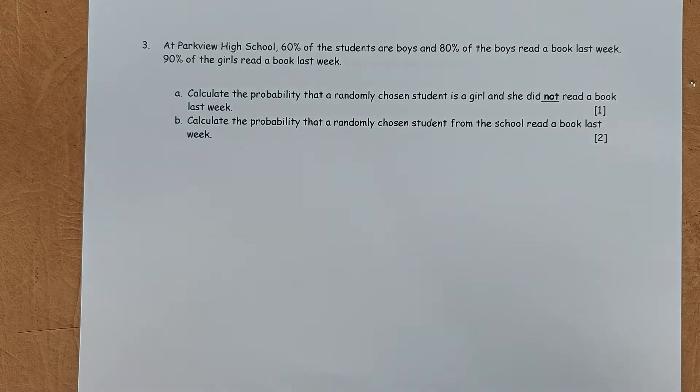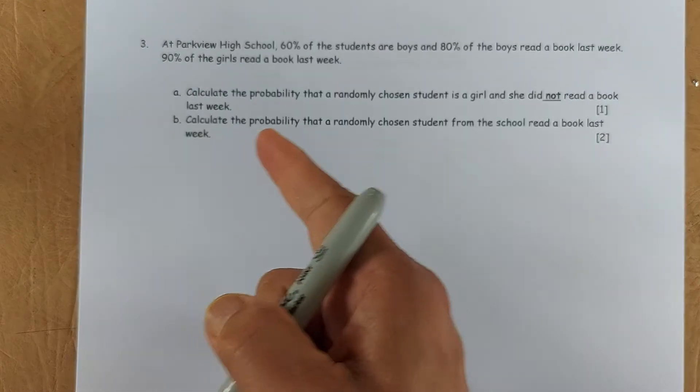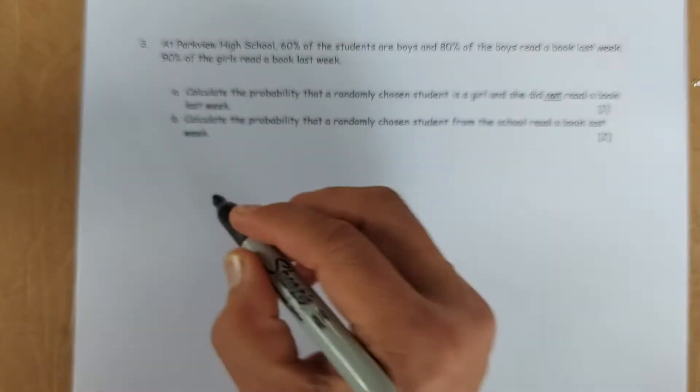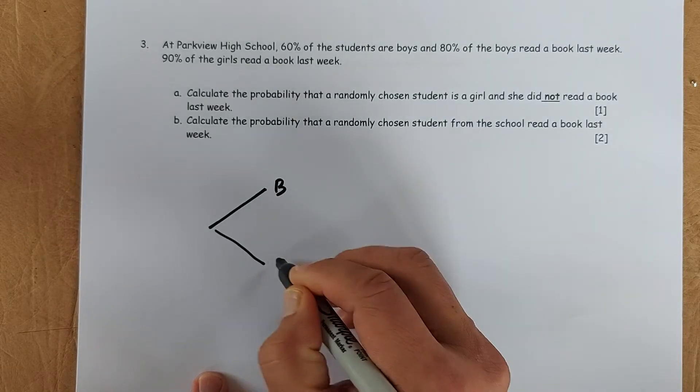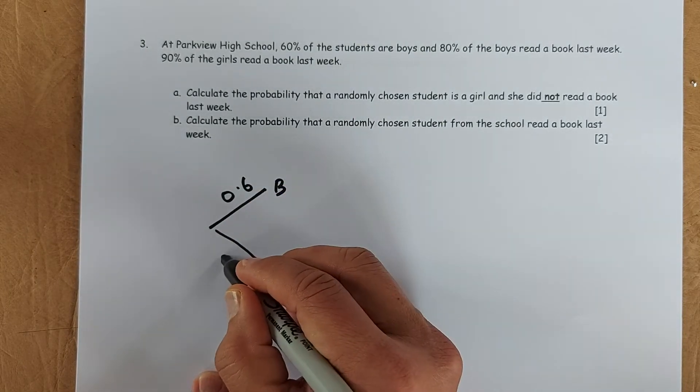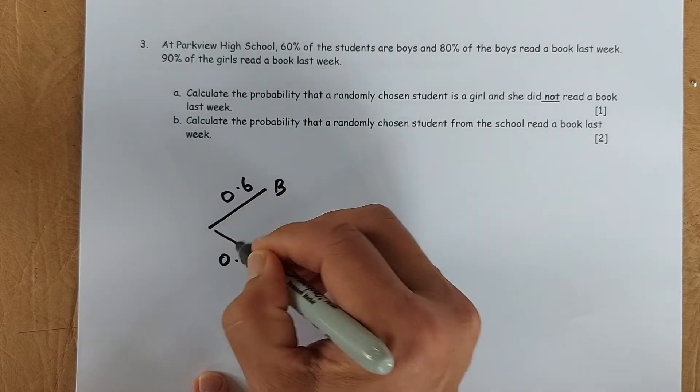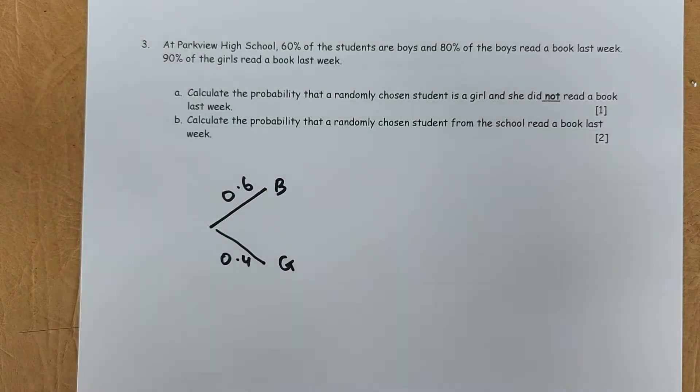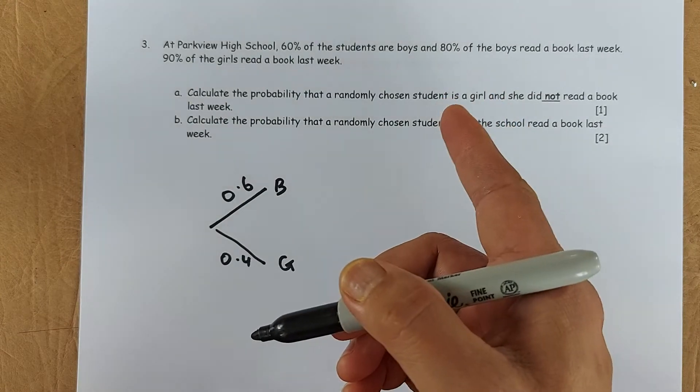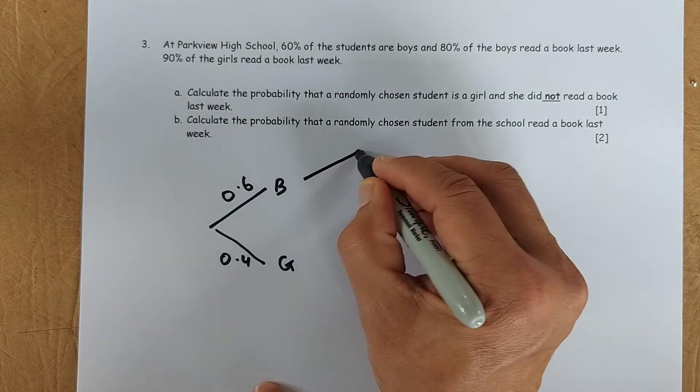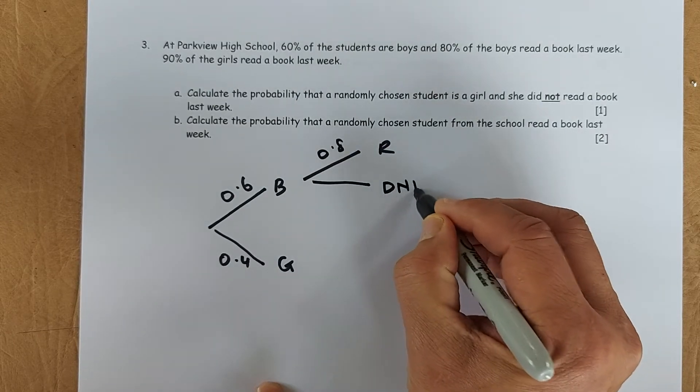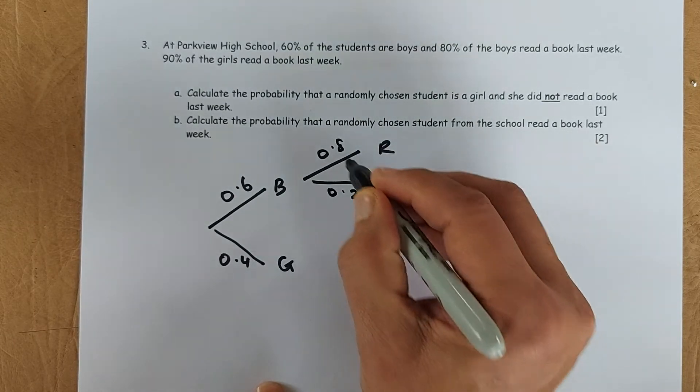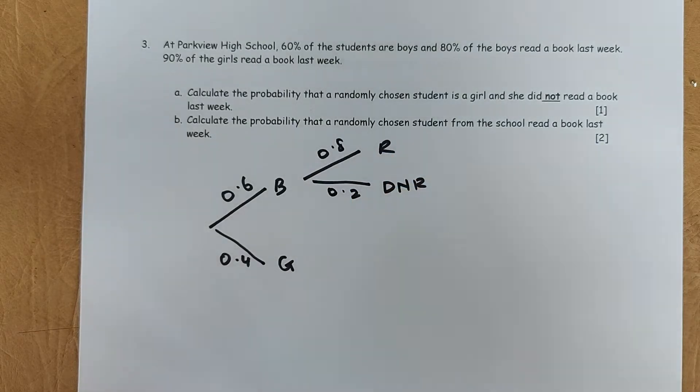Now we shall look at the next question. This is the probability section. So in this school, Parkview High School, 60% of the students are boys. So event 1 is boys and girls. So 60%, 0.6, and the girls will be 0.4, because in a branch, these two must add up to 1. 60% boys, 40% girls. Of the boys, 80% read the book. So if boys read is 80%, 0.8, do not read is going to be 0.2. Because if the readers is 0.8, 80%, the non-readers will be 20%.